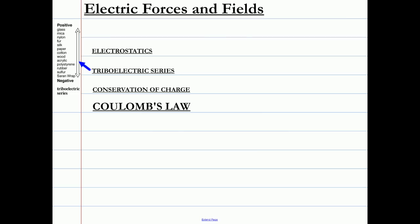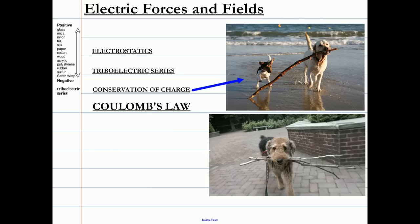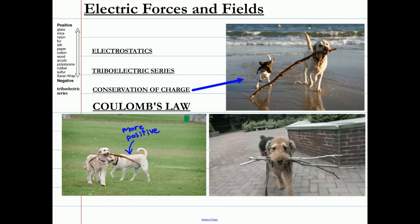The triboelectric series gives us a list of materials in order of their affinity for electrons. Materials towards the negative side are more electron greedy and are very good at taking electrons. Towards the positive end are more electron indifferent and are happy to give theirs up. We can relate these materials with their electrons to dogs and sticks. Some dogs are better at getting sticks than others. When two dogs meet, in order for one dog to gain a stick, another dog has to give one up. A material can accumulate a number of sticks, electrons, and build up a large negative charge.